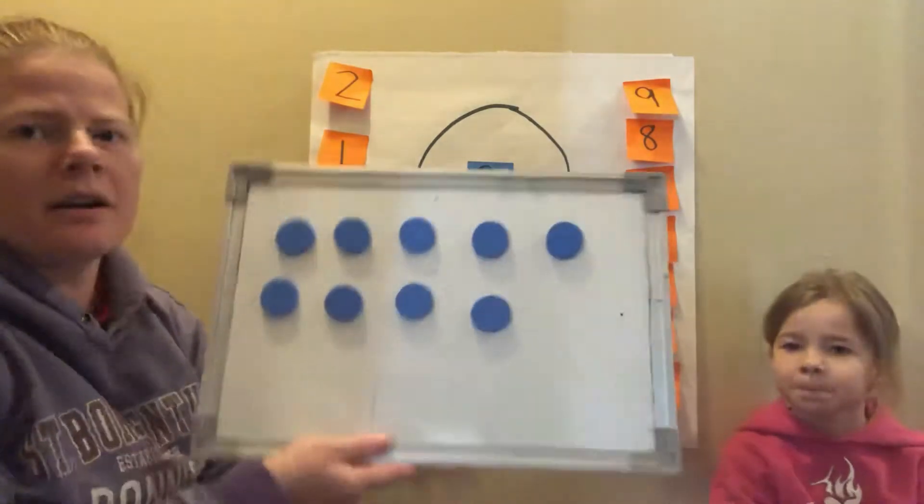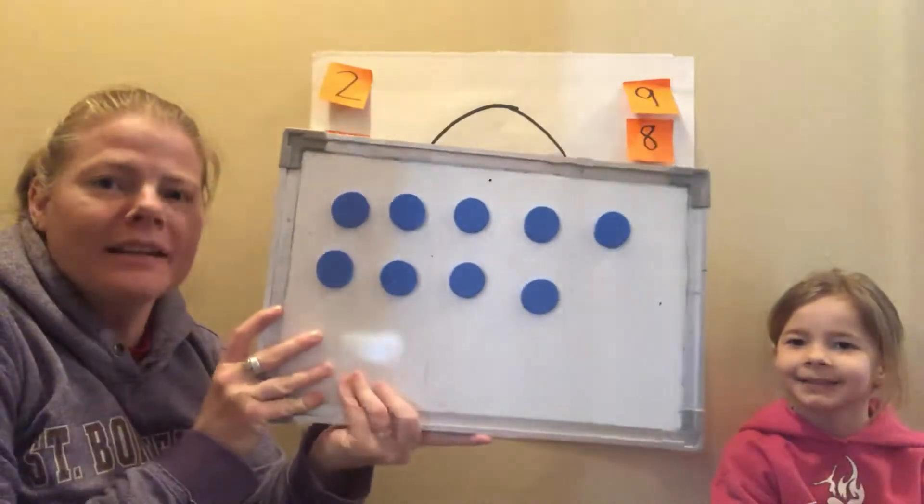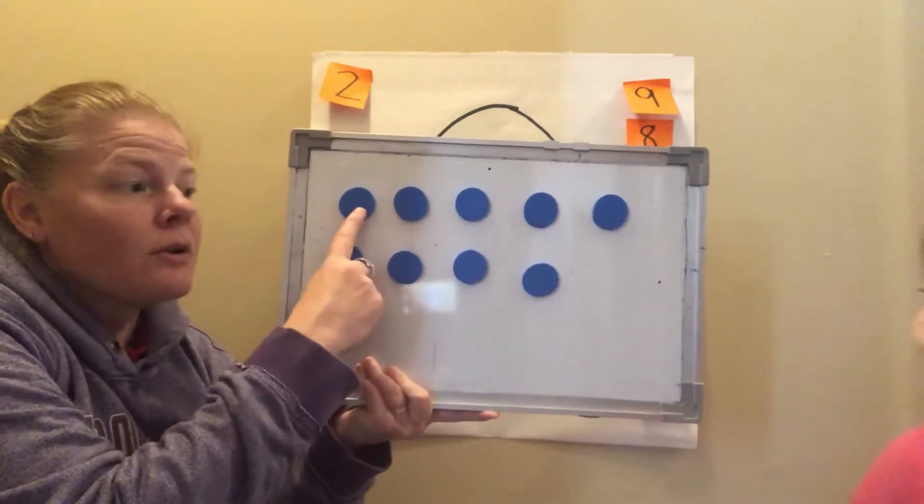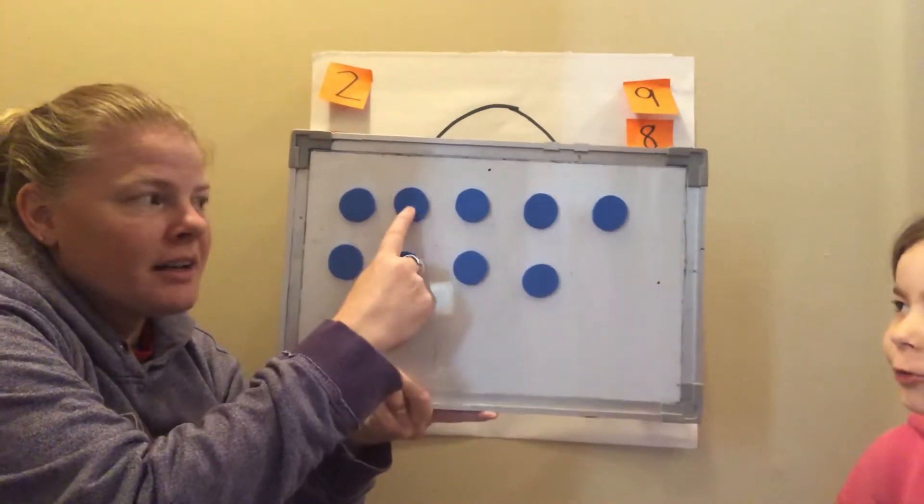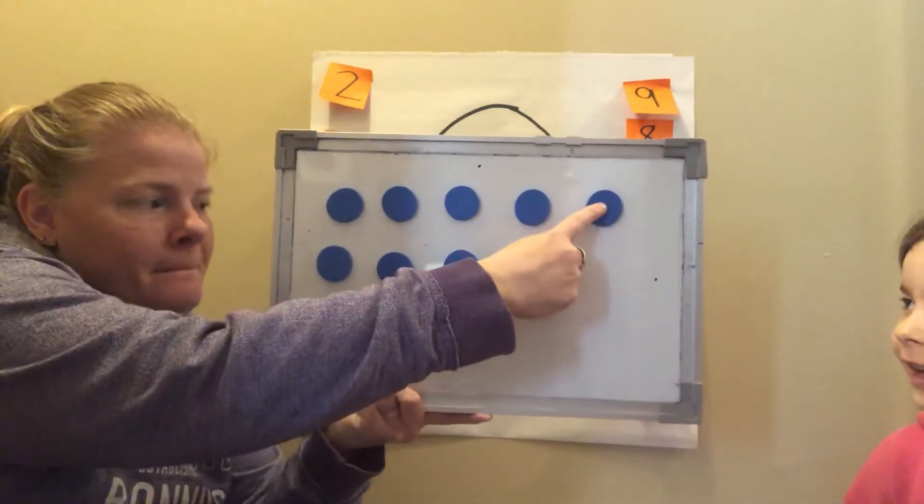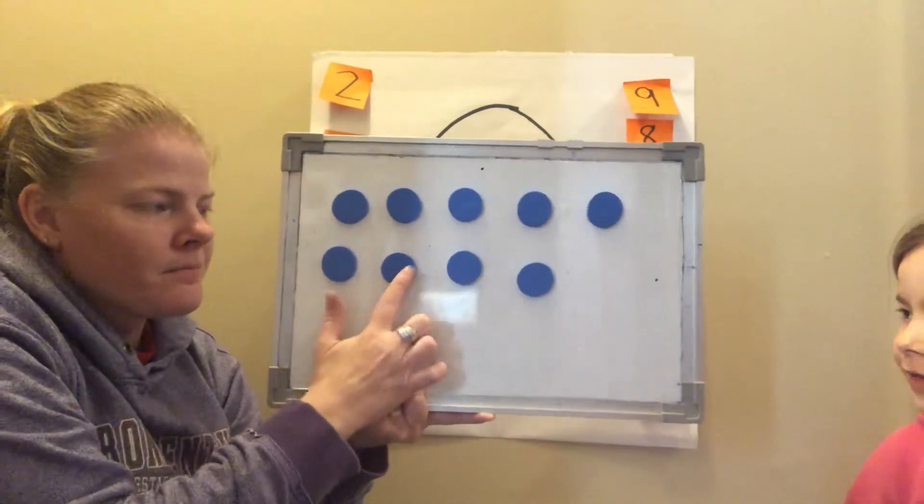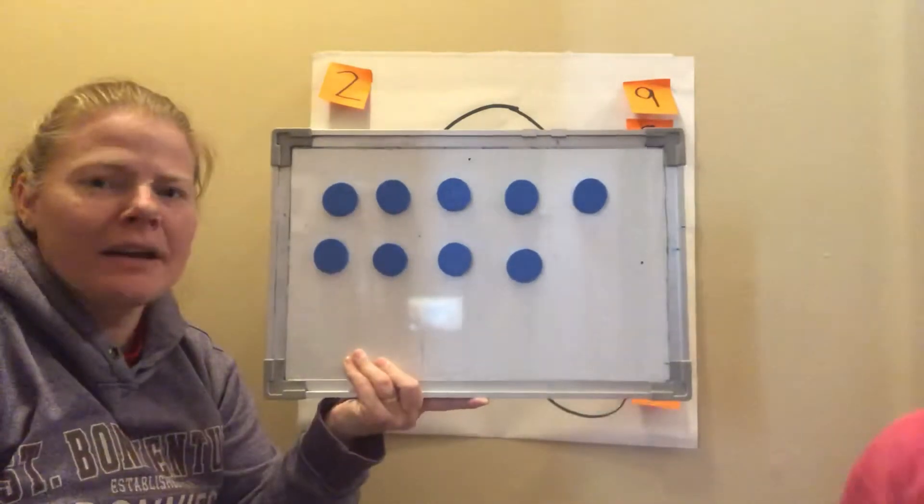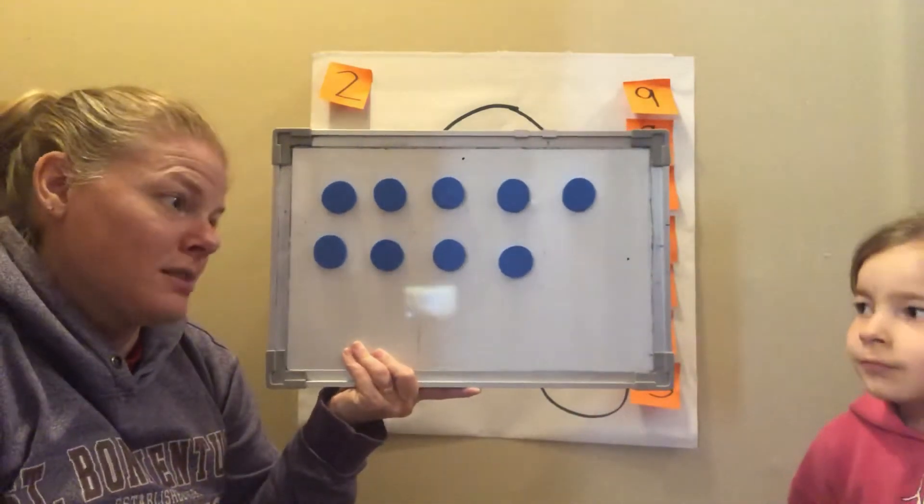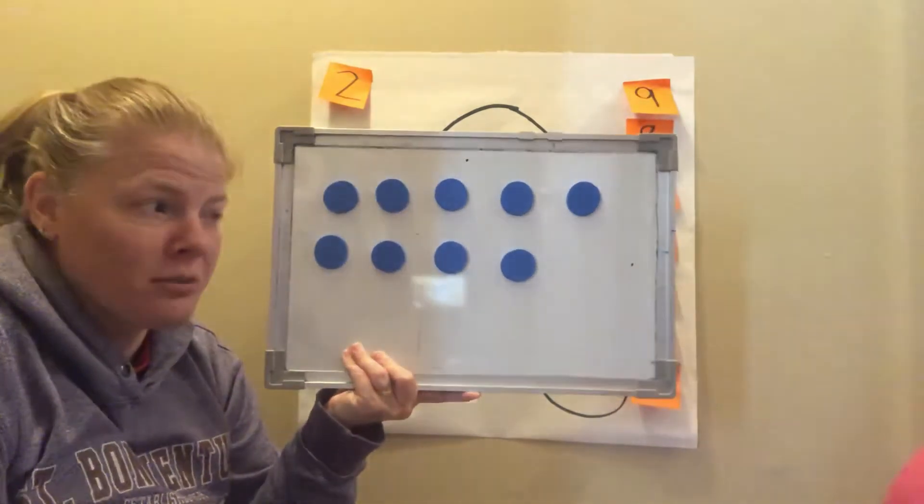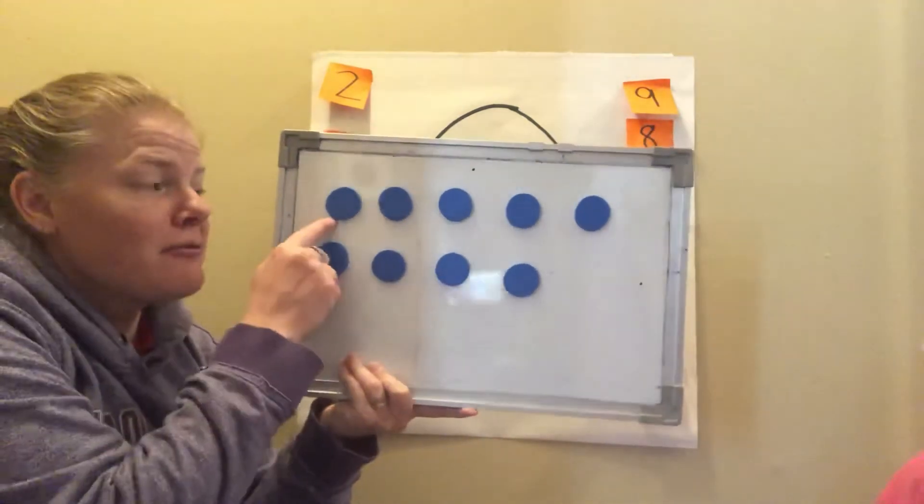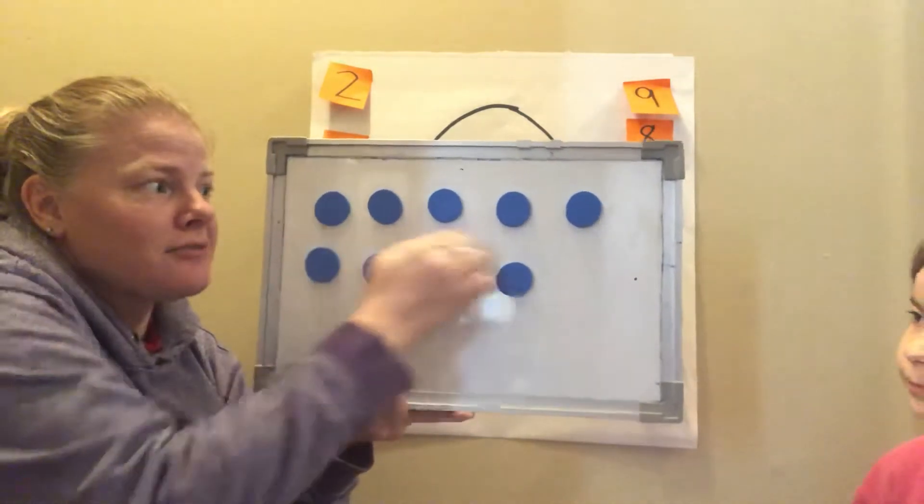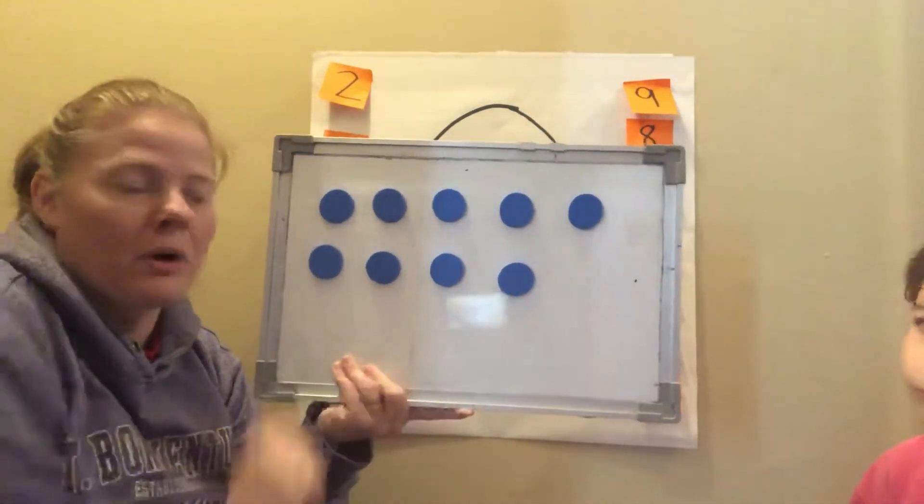All right, so how many are we starting with Shelby? Nine. Let's make sure that Mrs. Chamberlain has nine. Help me out friends. One, two, three, four, five, six, seven, eight, nine. Right, so you could count them to make sure I have nine, but we know another way to make nine don't we? What's another way we know to make nine Shelby? Five and then four. Five and then four because she sees it in a five group way and she knows that nine is five and four more. Good.